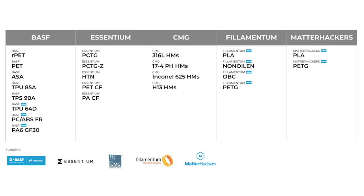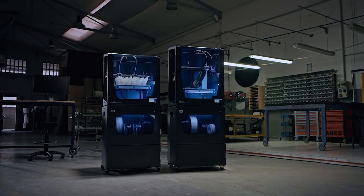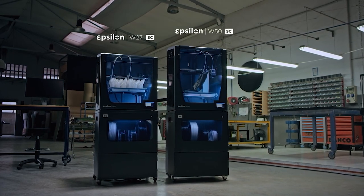BCN3D offers a natural ABS blend without additives that is ideal for many applications. However, thanks to the open filament network, we can also offer printing profiles for ABS blends from third-party filament manufacturers such as BSF. Their PC-ABS FR is a polycarbonate ABS with flame retardant properties.